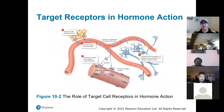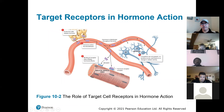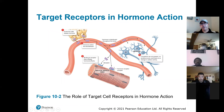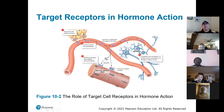An endocrine gland releases a hormone — shown here as a purple molecule — into the bloodstream. This hormone gets everywhere the bloodstream goes, reaching skeletal muscles and neurons, but it only affects skeletal muscles because they have the correct receptor. The neurons don't have the correct receptor shape, so skeletal muscle is the target for this hormone even though it reaches other areas.